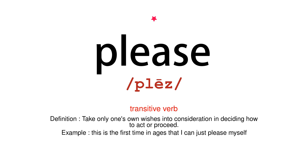Transitive verb. Definition: Take only one's own wishes into consideration in deciding how to act or proceed. Example: This is the first time in ages that I can just please myself.